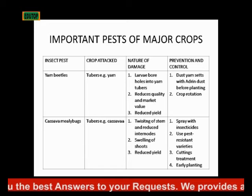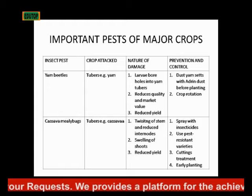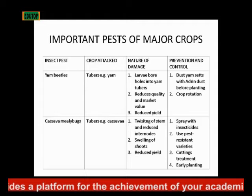How do you control and prevent cassava mealybugs? You spray with insecticide, you use pest-resistant varieties, then you treat the stem cuttings of the cassava, and you do early planting.